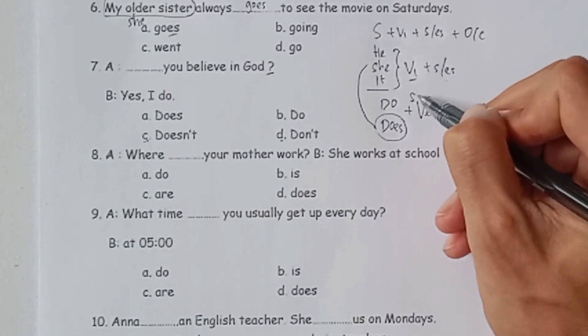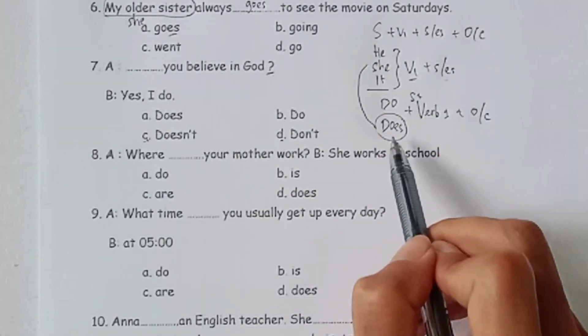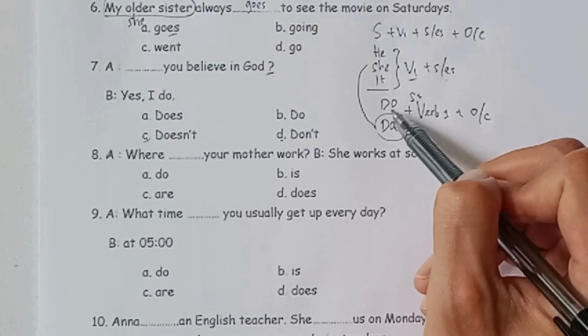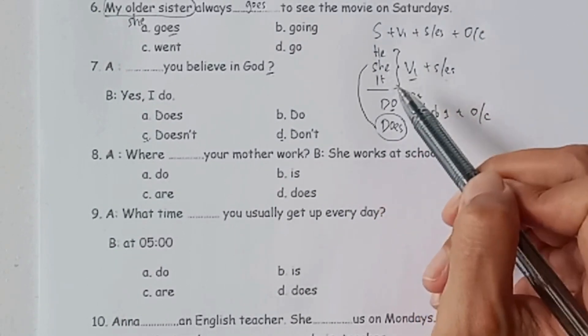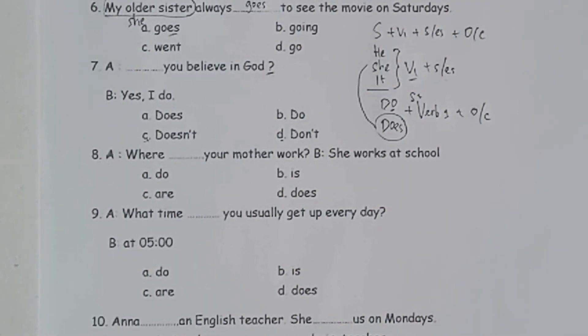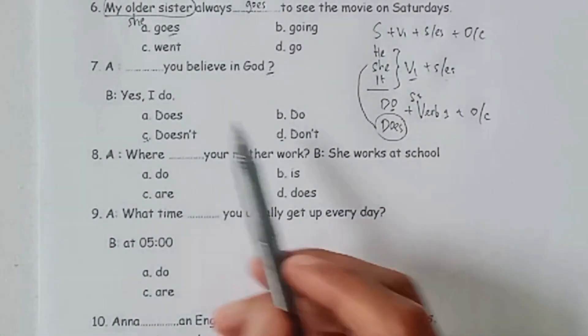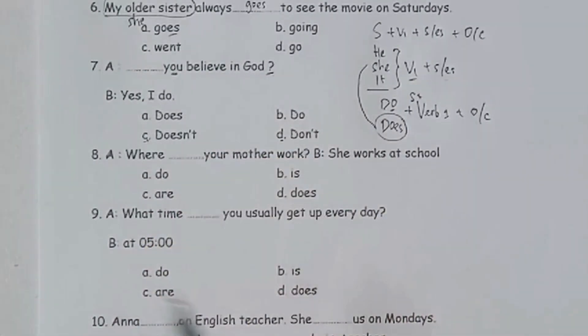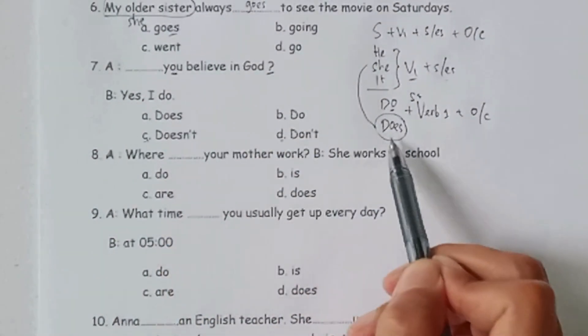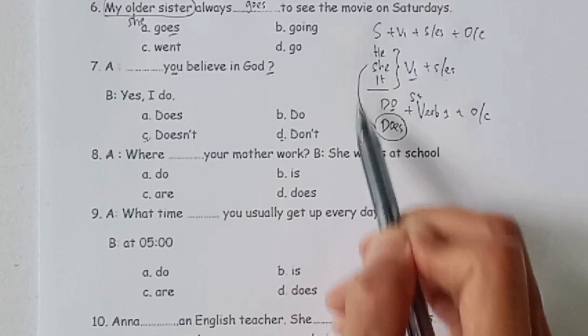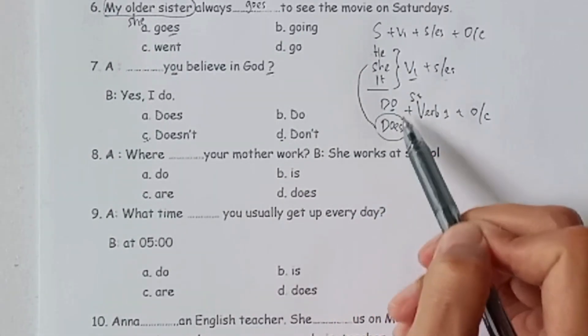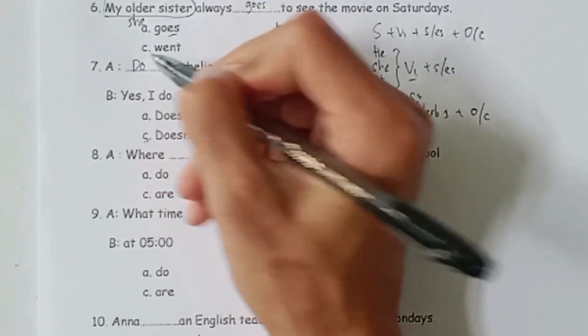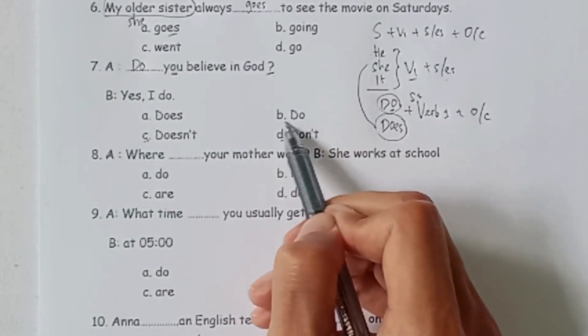Ada subject dulu ya. Jadi does he, does she, does it. Kalau untuk kata do, ini selain dari subject yang tiga ini: I, you, they, dan we. Karena kita sudah lihat yang menjadi subject adalah you. Nah karena you tidak masuk dalam kategori pasangan does, maka otomatis menjadi pasangan dari you adalah do. Jadi kita bisa ambil do you. Do you believe in God? Maka jawabannya adalah do.